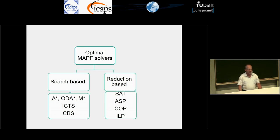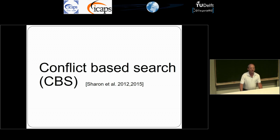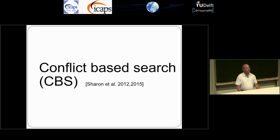Other methods are search-based. There is a nice line of work in the A* family to solve this. But today we would like to focus on a somewhat different search algorithm called CBS, Conflict-Based Search. It was introduced by Guni Sharon, who I had the honor to be his PhD advisor — his PhD was on this algorithm. I will explain at a high level how CBS works and then present our contribution.